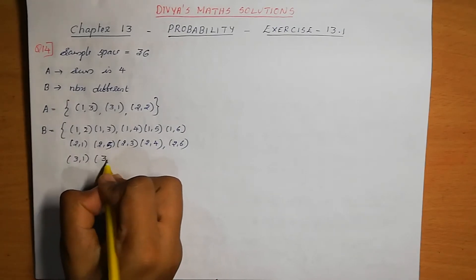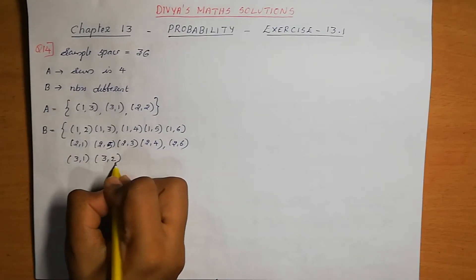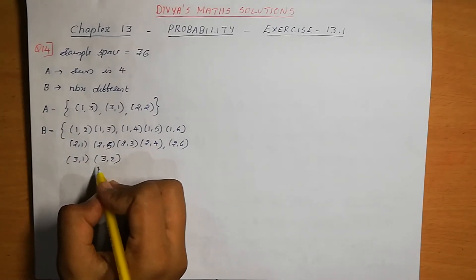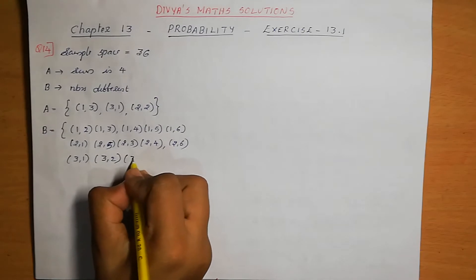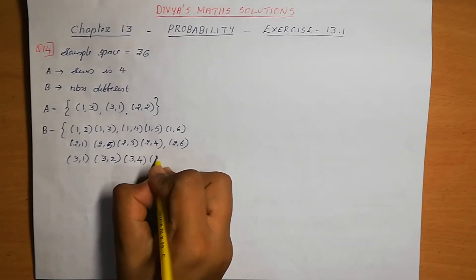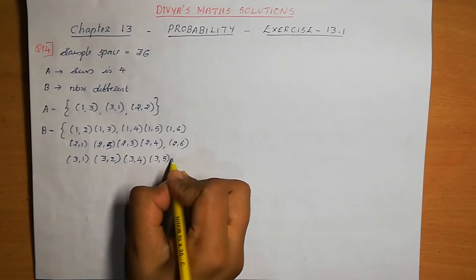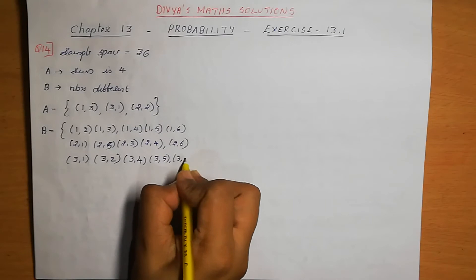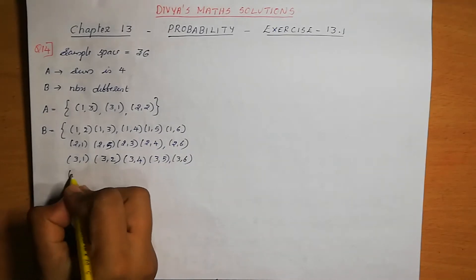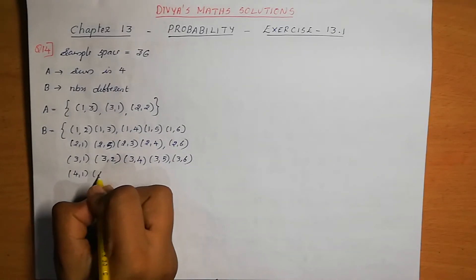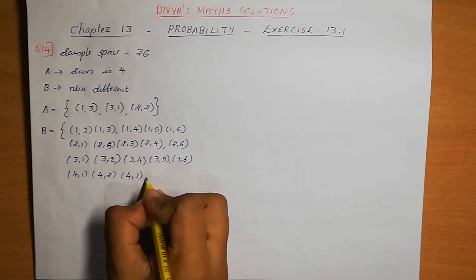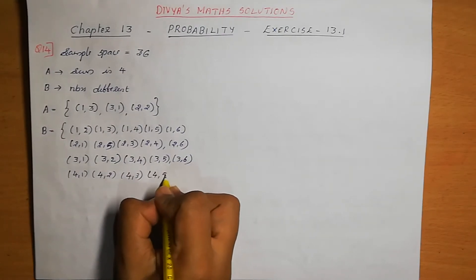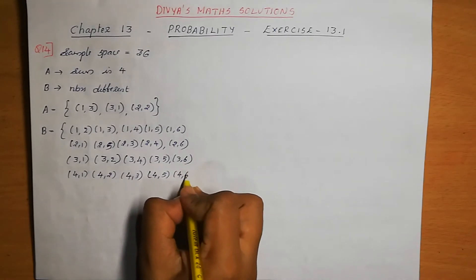Continuing event B: for first die 3 — (3,1), (3,2), (3,4), (3,5), (3,6); (3,3) is not possible. For first die 4 — (4,1), (4,2), (4,3), (4,5), (4,6); (4,4) is not possible.